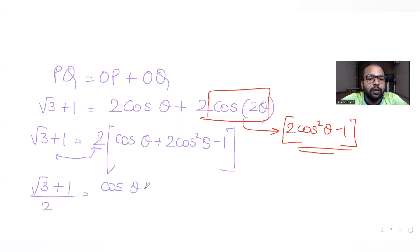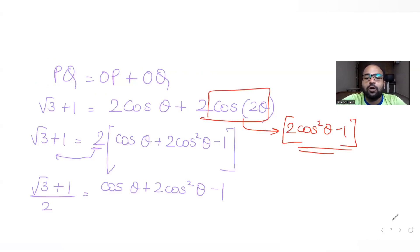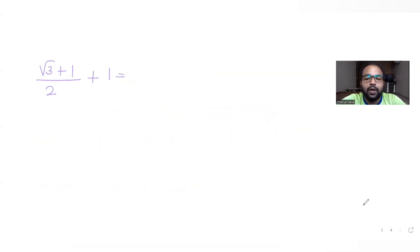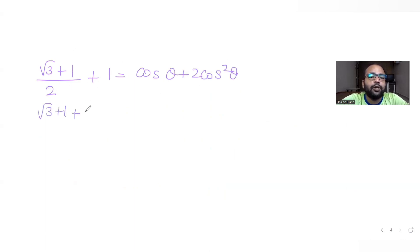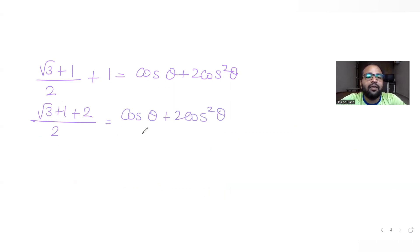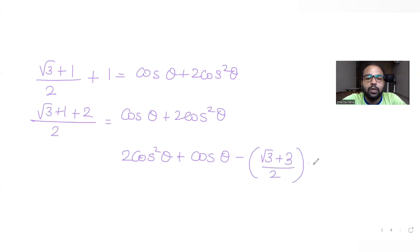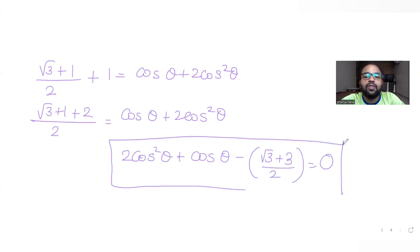Expanding: √3 + 1 = 2cos(θ) + 4cos²θ − 2. Moving the −2 to the left side gives √3 + 3 = 4cos²θ + 2cos(θ), which rearranges to: 4cos²θ + 2cos(θ) − (√3 + 3) / 2 ... Forming the quadratic: 2cos²θ + cos(θ) − (3 + √3)/2 = 0.